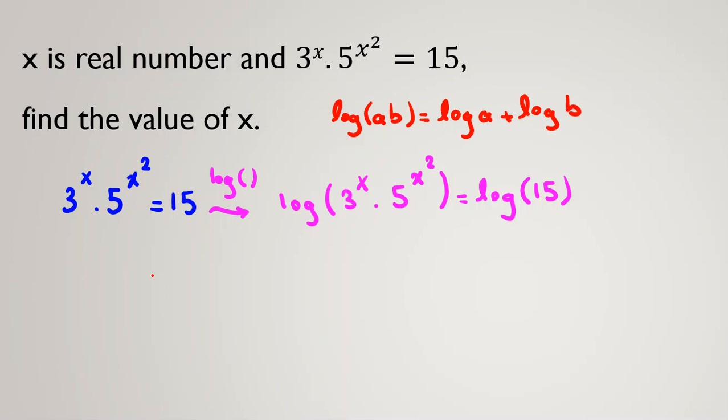Now, if we apply it here, let's write it. This A, we call this A, we call this B. It is log A plus log B, which will be log(3^x) plus log(5^(x²)) equals log 15.